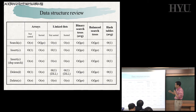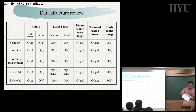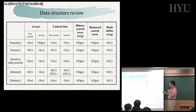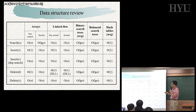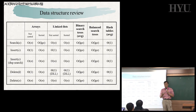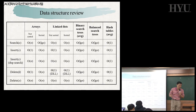Let's move on to the linked list. Linked list can be sorted or unsorted, but both cases take O(n) time for search. Can you explain why? Binary search is not permitted on a linked list, so sequential search is the only way to find an element. So both cases take O(n) time.